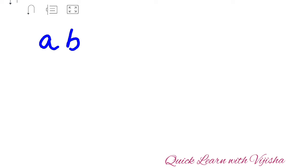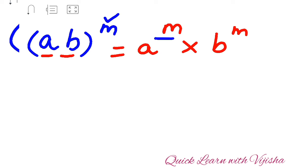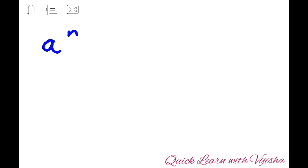Now we will see the next indices form. If the question is in the form (a·b) raised to m — meaning both bases are different — then the index m is distributed to both bases: it becomes a raised to m multiplied by b raised to m. The index m is given to both bases.